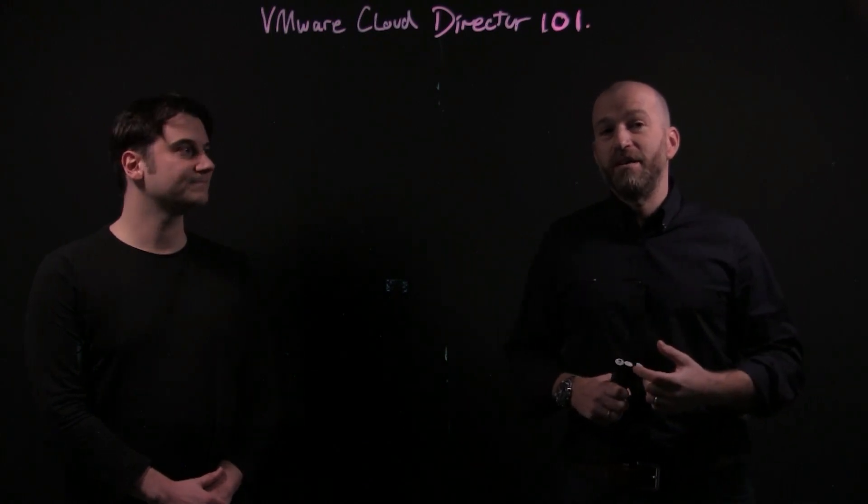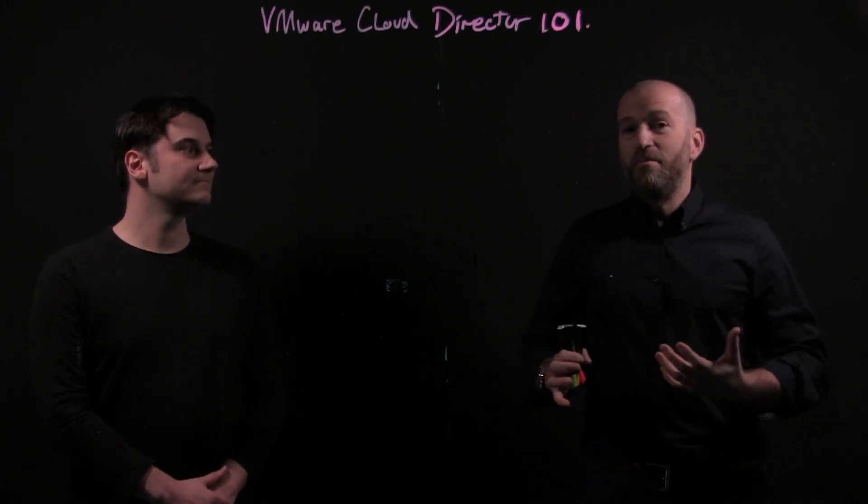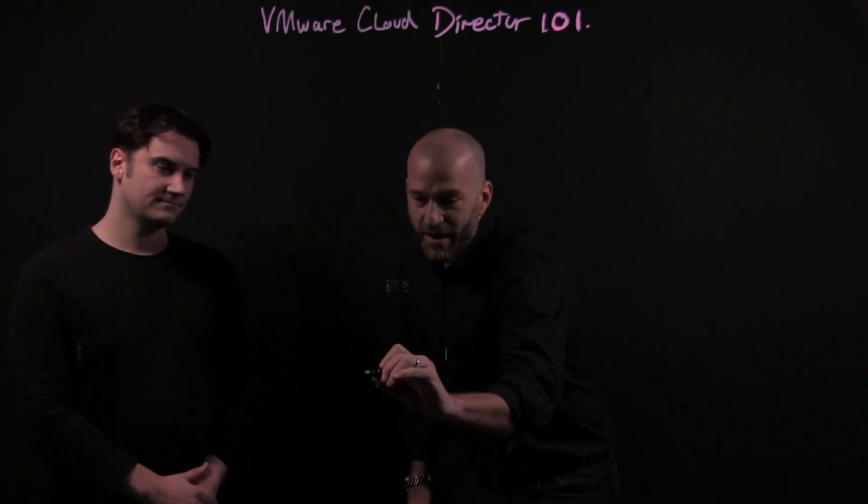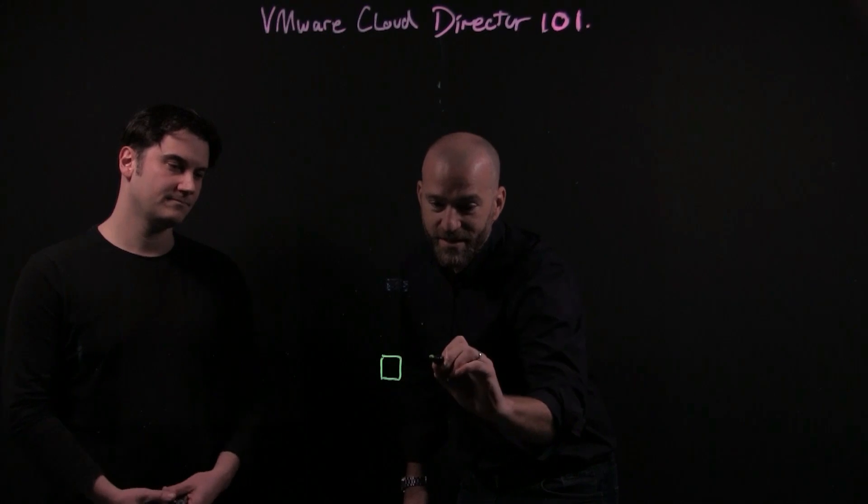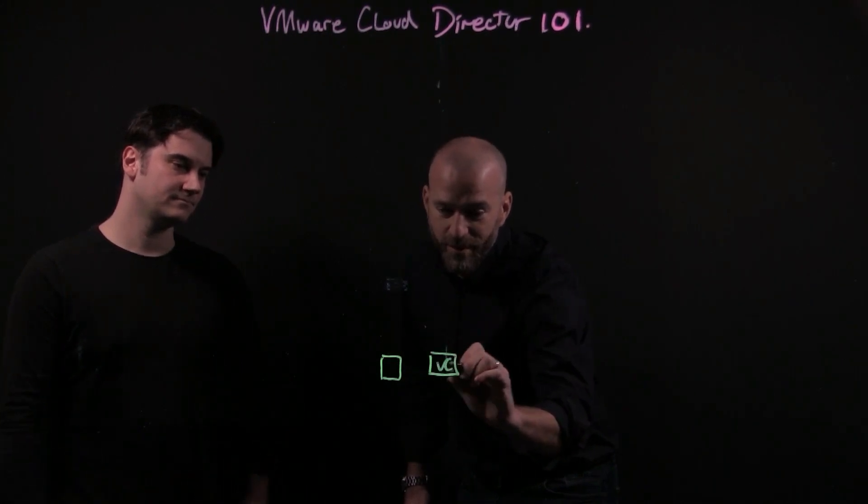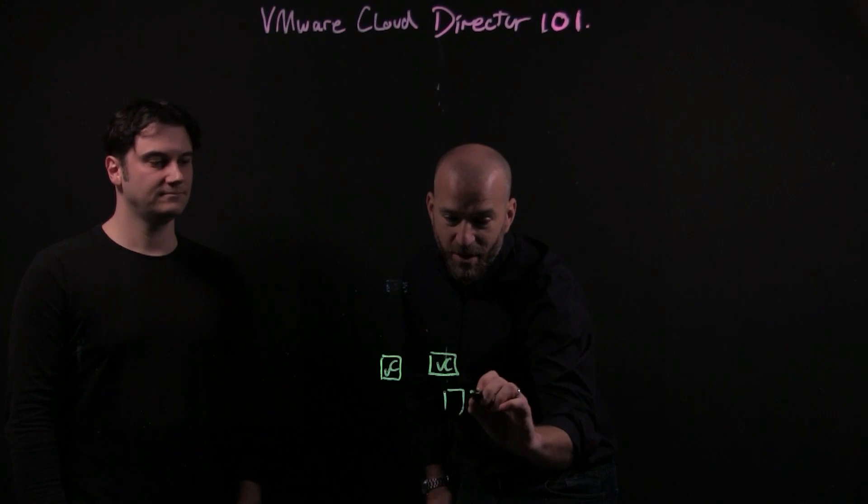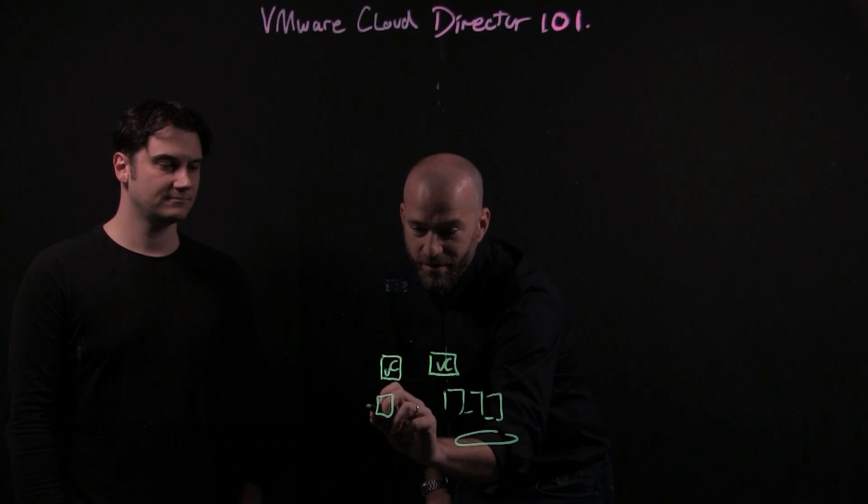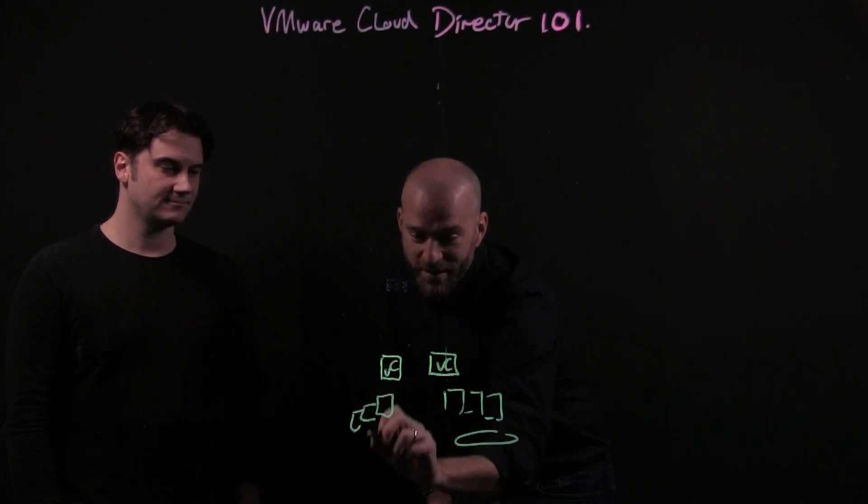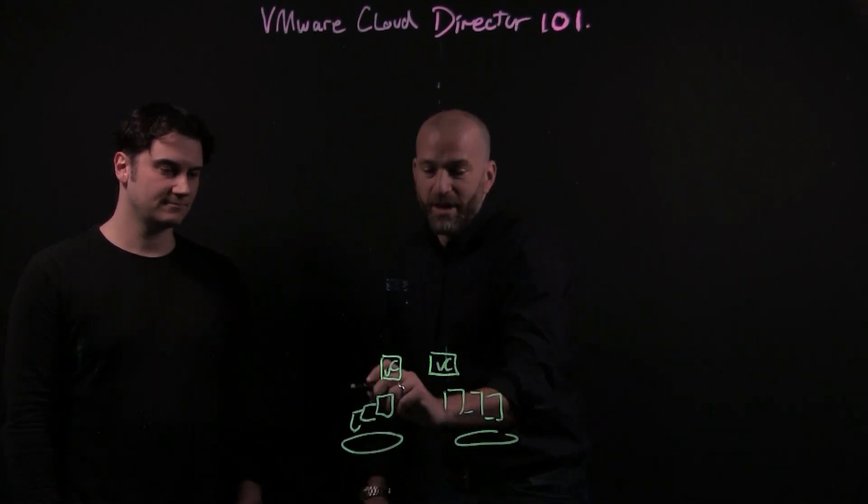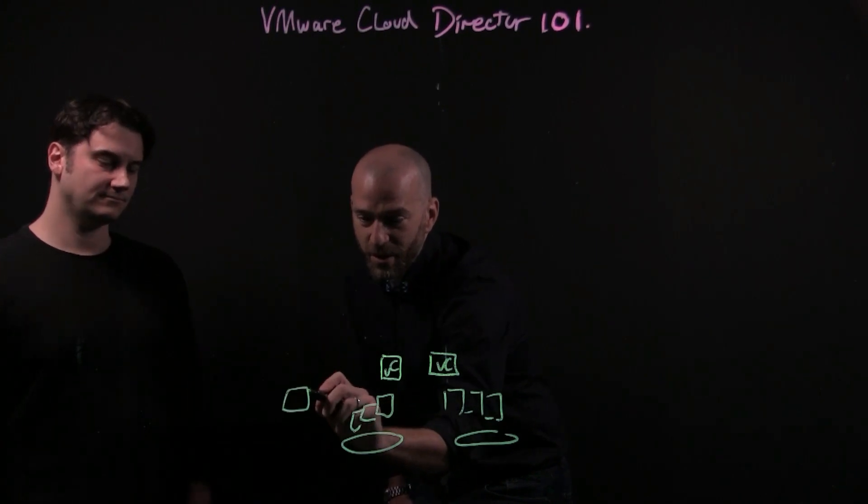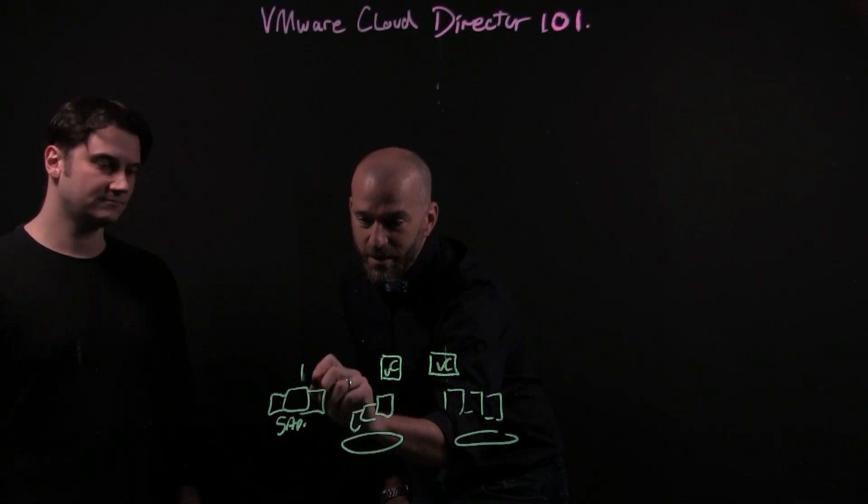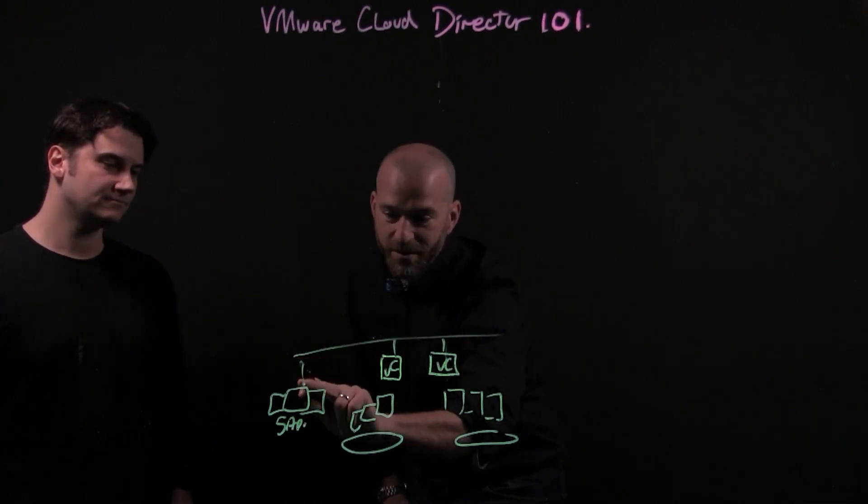Julian's the expert in vCloud Director, so I'm going to be asking the questions about how some of the core concepts work. We're going to start this series by looking at a basic example with a service provider that has a number of vCenters today, with clusters behind these vCenters and resource pools. And potentially some customized workloads, some specialist workloads like SAP for example.